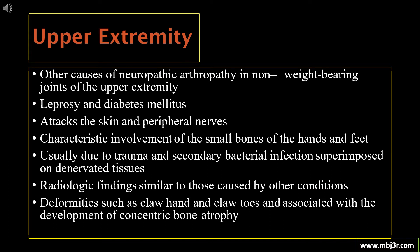Other causes of neuropathic arthropathy in non-weight-bearing joints of the upper extremity are leprosy and diabetes mellitus. Leprosy is nowadays less common; diabetes mellitus is more common. Leprosy attacks the skin and peripheral nerves. Characteristic involvement of the small bones of the hands and feet is usually due to trauma, secondary bacterial infection, and superimposed infection on denervated tissues. Deformities such as claw hands and claw toes are associated with the development of concentric bone atrophy.